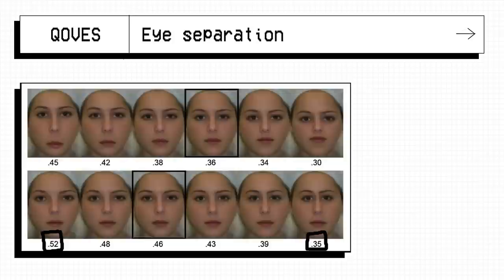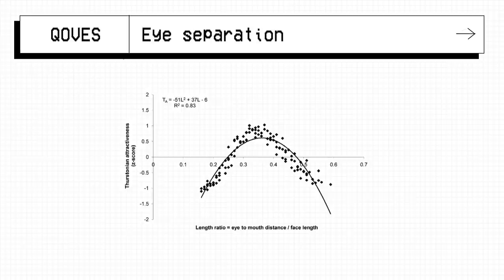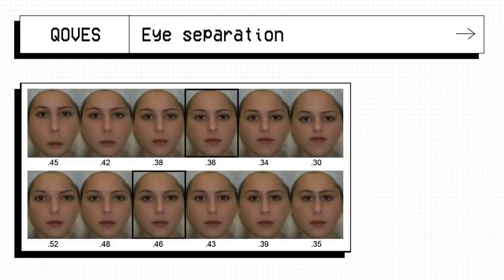As for Experiments 1 and 2, the researchers systematically varied the length ratio by altering the vertical distance between the eyes and unsurprisingly there is also a range of mid-facial lengths that perform better than others.